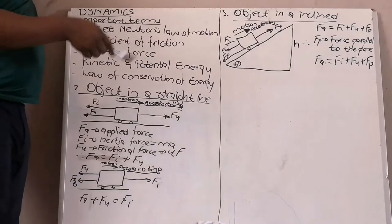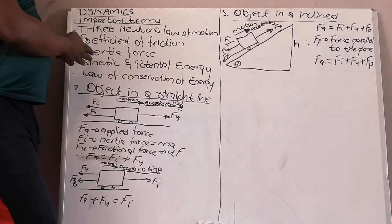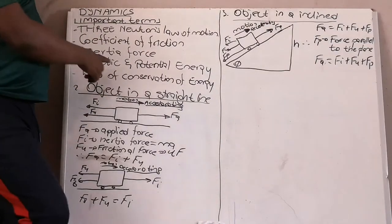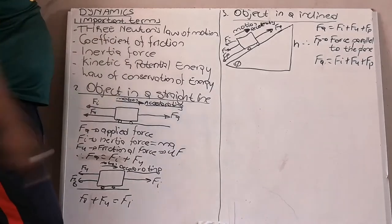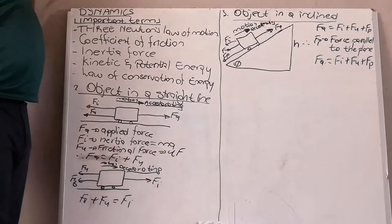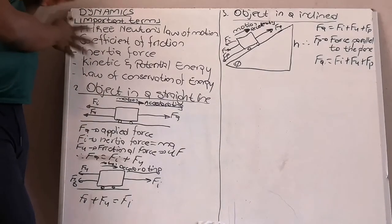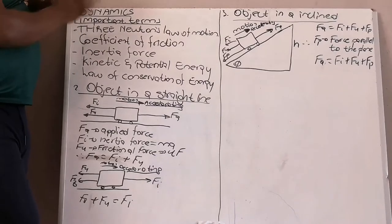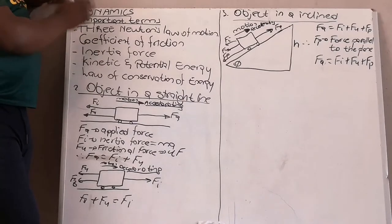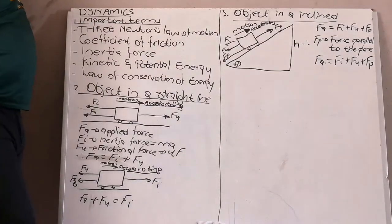For the sake of your marks, you need to know what happens with your energy. When you lose your kinetic energy — if it's going up an incline — you lose kinetic energy, but you gain potential energy. So we're going to study kinetic and potential energy. You need to check all these terms: Newton's law, coefficient of friction, inertia force, kinetic and potential energy, and the law of conservation of energy.